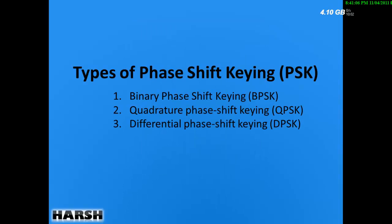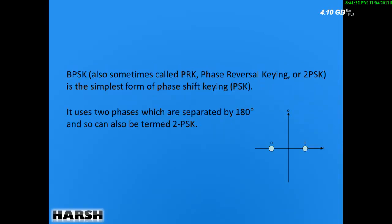There are many types of Phase Shift Keying. For example: Binary Phase Shift Keying (BPSK), which is my main topic; Quadrature Phase Shift Keying (QPSK), which has four phases; and Differential Phase Shift Keying (DPSK). BPSK is also called PRK — Phase Reversal Keying — or 2PSK, because it has two phases. In the IQ diagram, for 1 it is +90 degrees and for 0 it is -90 degrees, giving a difference of 180 degrees. It is called Phase Reversal Keying because changing from 0 to 1 reverses the phase by 180 degrees.